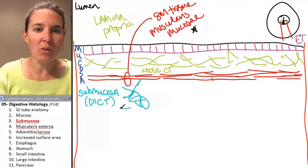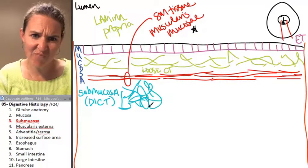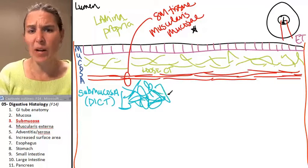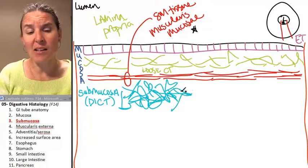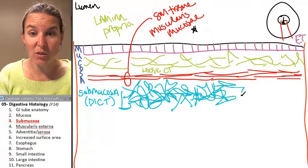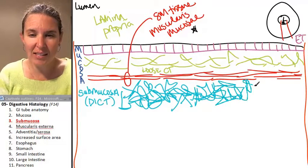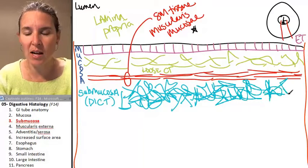Connective tissue mess — dense, irregular. And I'm telling you right now, when you see the dense irregular connective tissue, it's extremely obvious.